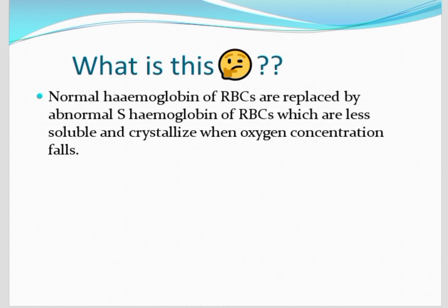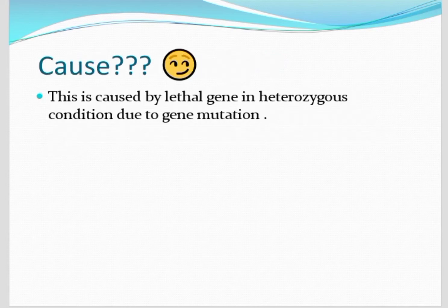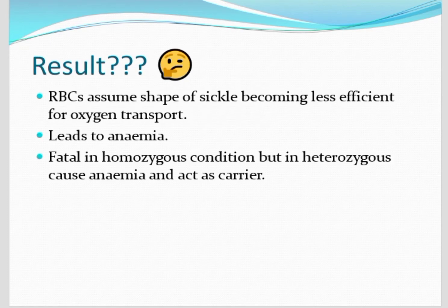Normal hemoglobin of the red blood cells is replaced by abnormal sickle hemoglobin, which is less soluble and crystalline when oxygen concentration falls. This is caused by a lethal gene in heterozygous condition due to gene mutation. In heterozygous condition, two different types of alleles are present.